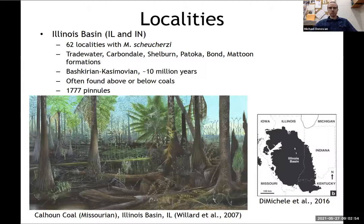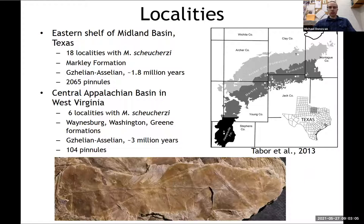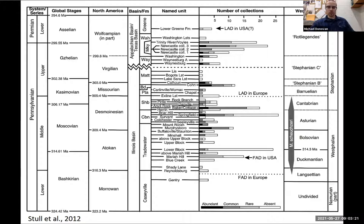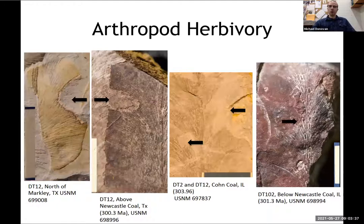Some of these localities are from the Illinois Basin — about a 10-million-year period through the Kasimovian. These floras are often found above and below coal beds. I also looked at floras from the Midland Basin in Texas, from the Kasimovian to Asselian, and the Central Appalachian Basin, also Kasimovian to Asselian. Here's a stratigraphic column of all the different floras I looked at, all curated at the Smithsonian. In the Kasimovian, there's a good representation of wetland floras.